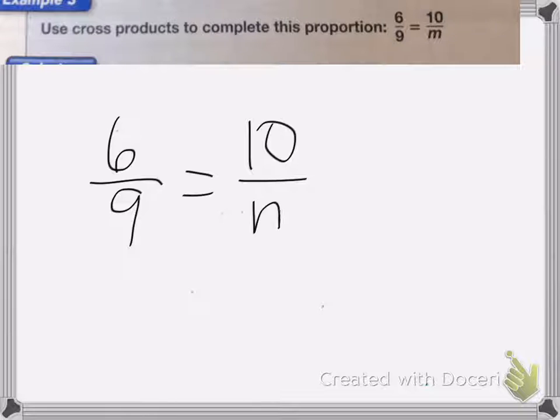So this one we want to find the unknown number. We need to complete the proportion. So we have 6 ninths is equal to 10 over m. Now we have done this before, but in this case, I can't multiply 6 by some number to equal 10. It doesn't work. So what I need to do is do a cross product to solve for m.